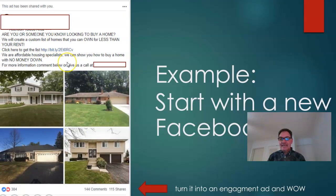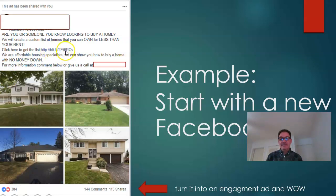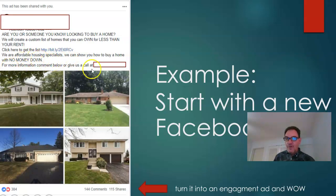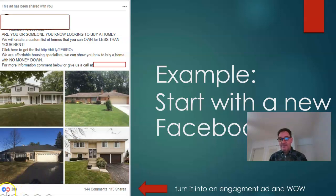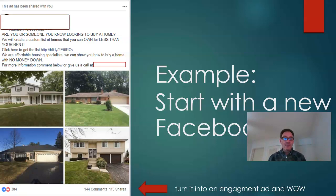Here's an example post we created: 'Are you or someone you know looking to buy a home? We'll create a custom list of homes you can own for less than rent — to get the list, click here.' It asks qualifying questions like how many bedrooms, baths, and whether they've talked to a lender yet. We ran this post as an engagement ad for a few weeks and got 384 thumbs up and hearts. That kind of engagement keeps your ad costs down and gives you a relevance score through the roof with Facebook, so they serve it up to more people for less money.